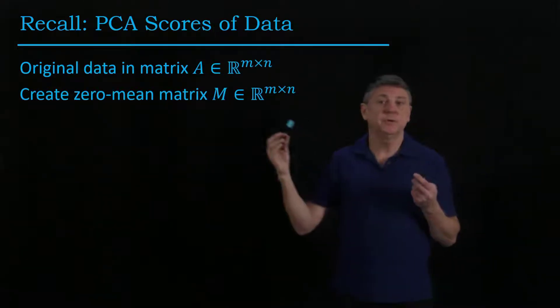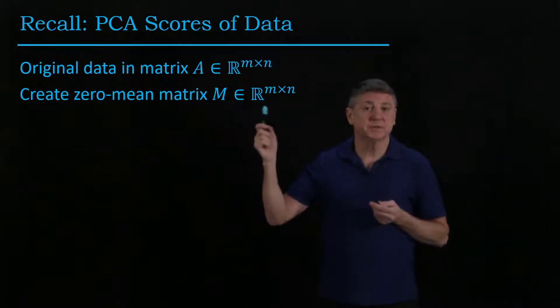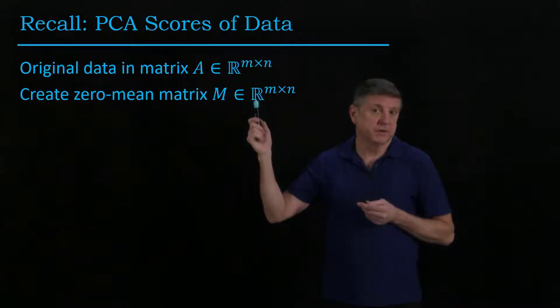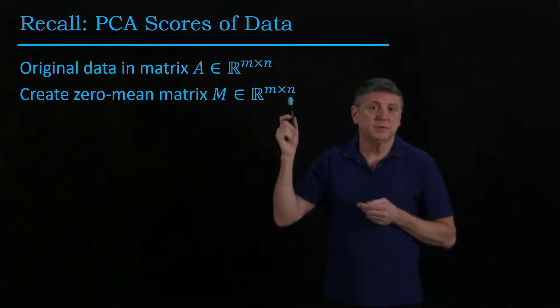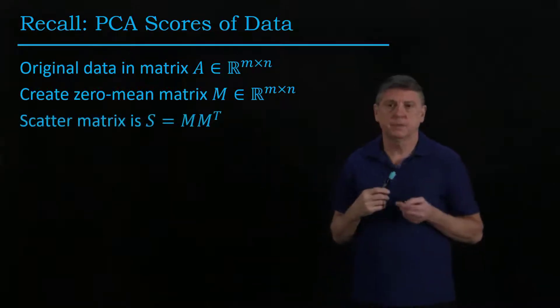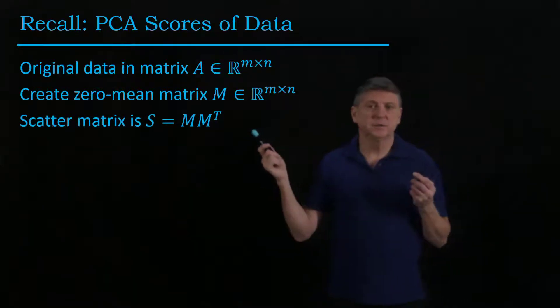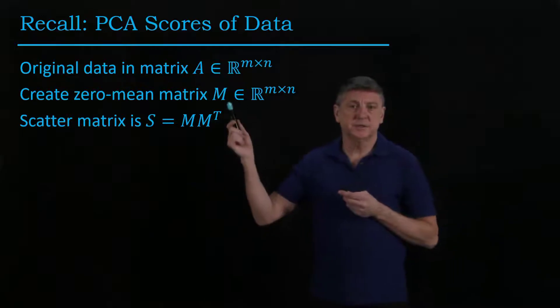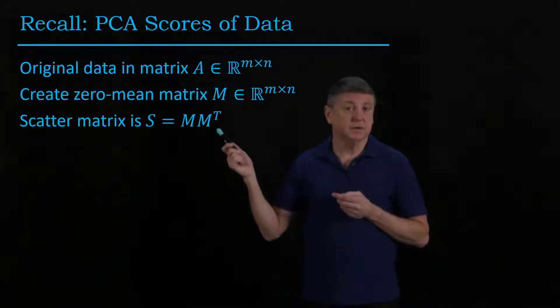And one of the first things we do is we create a zero mean matrix. So now these are all still real numbers, and now each one of these columns, if we add the numbers up, they'll come to zero. The scatter matrix is related to this zero mean matrix, and here we've taken the transpose in the wrong order.